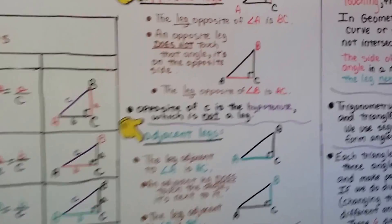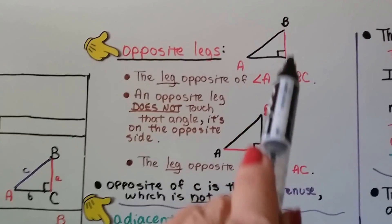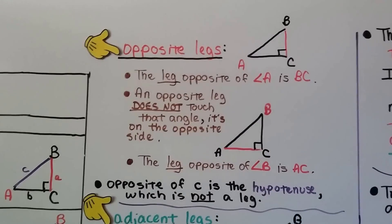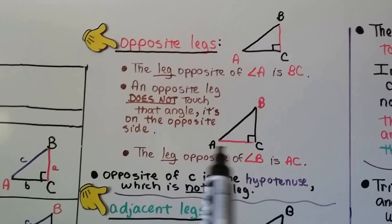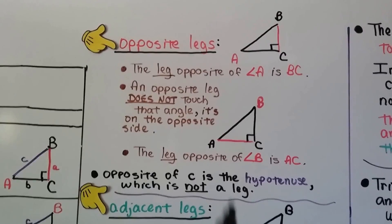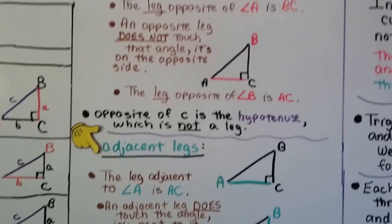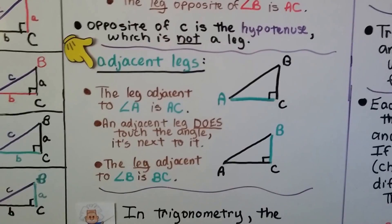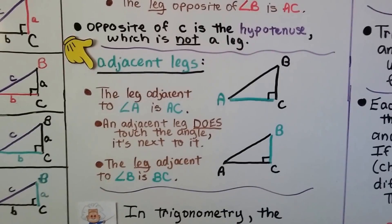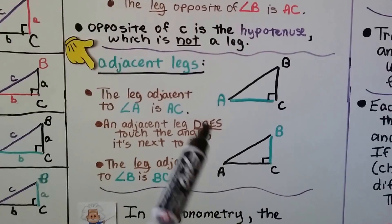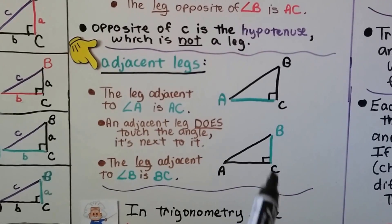The leg opposite angle A is BC — an opposite leg does not touch that angle; it's on the opposite side of the triangle. The leg opposite angle B would be this leg. For adjacent legs, the leg adjacent to angle A is AC, right here. An adjacent leg does touch the angle — it's next to it. And the leg adjacent to angle B would be this leg right here.